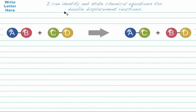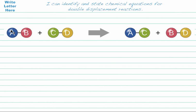In this video, we're going to identify and state chemical equations for double displacement reactions. What really happened in that video was we took one compound and added it to another compound, and they sort of switched partners. The A went with the C and created a new compound, and the B went with the D and created a new compound.